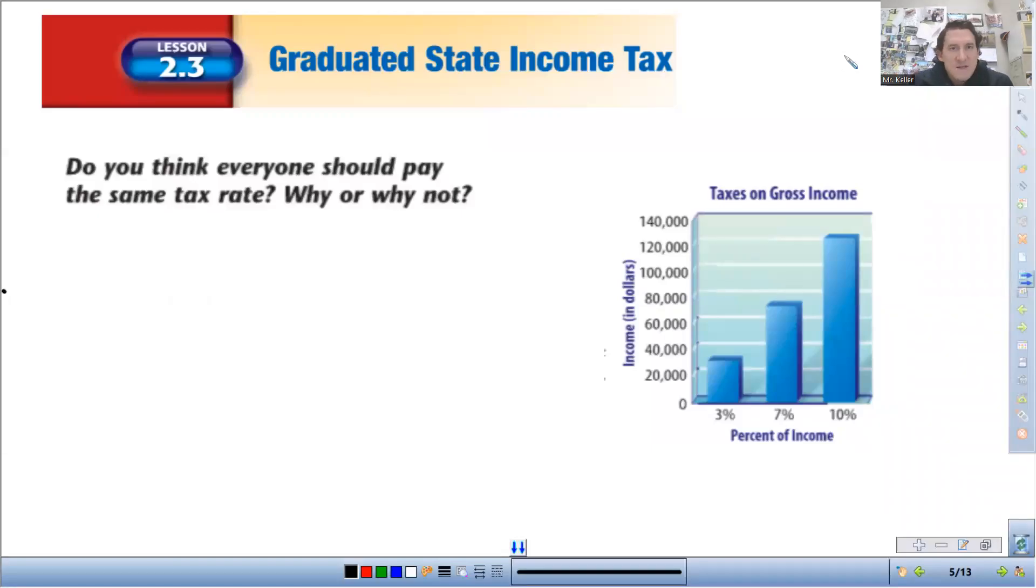All right, financial math classes. Today we are talking about graduated state income tax. So this is typically how state or income tax works. As the tax brackets move up and you make more money, only the money that is above a certain amount gets taxed at the higher rate.